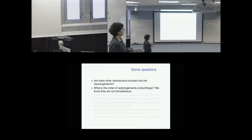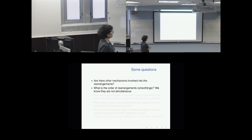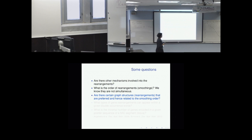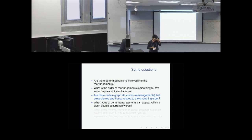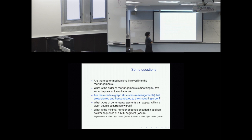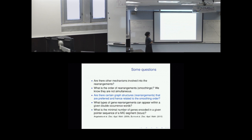There are mathematical and biological questions we can ask: What is the order of the rearrangements? Are certain graph structures or rearrangements preferred, related to smoothing order? What types of gene rearrangements can appear? What is the minimal number of genes encoded in a given pointer sequence? Many other questions can be listed.